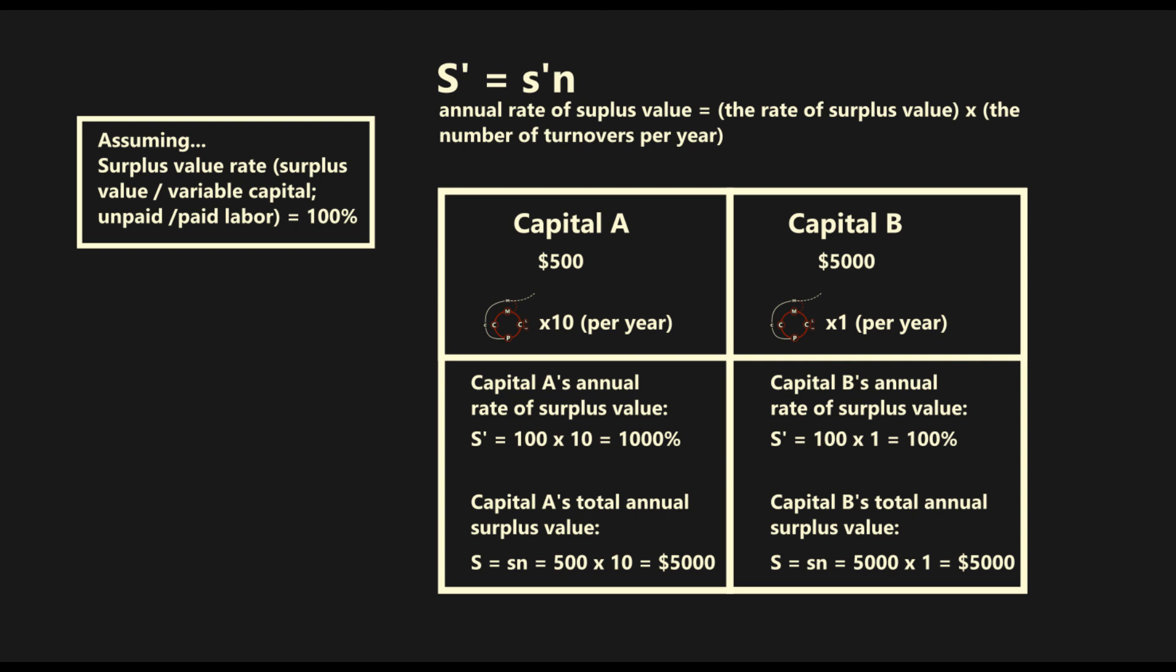He then gives us the example of two capitals, A and B. Capital A is a variable capital of $500 and turns over 10 times a year. Knowing that the annual rate of surplus value is simply the rate of surplus value multiplied by the number of turnovers, we get the following equation. Plugging in our numbers for capital A, we get Capital A's annual surplus rate is therefore 1000%. We also know capital A's total annual surplus value using a variation of the same equation. In other words, capital A starts with $500 at the beginning of the year, producing $500 in surplus every cycle. After 10 cycles, at the end of the year, capital A has produced $5,000 in surplus and thus has an annual surplus rate of 1000%.